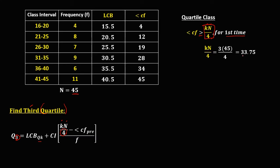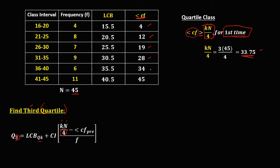We need to compare 33.75 to the less than CF values. Less than CF of 4 is not greater than 33.75, 12 is not greater than 33.75, then 34 is greater than 33.75. So therefore, this class is the quartile class.